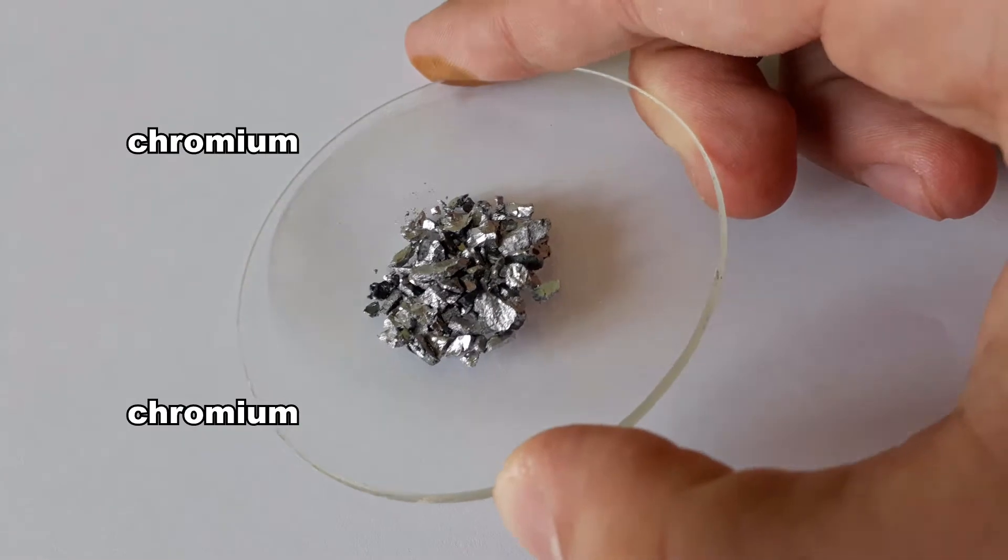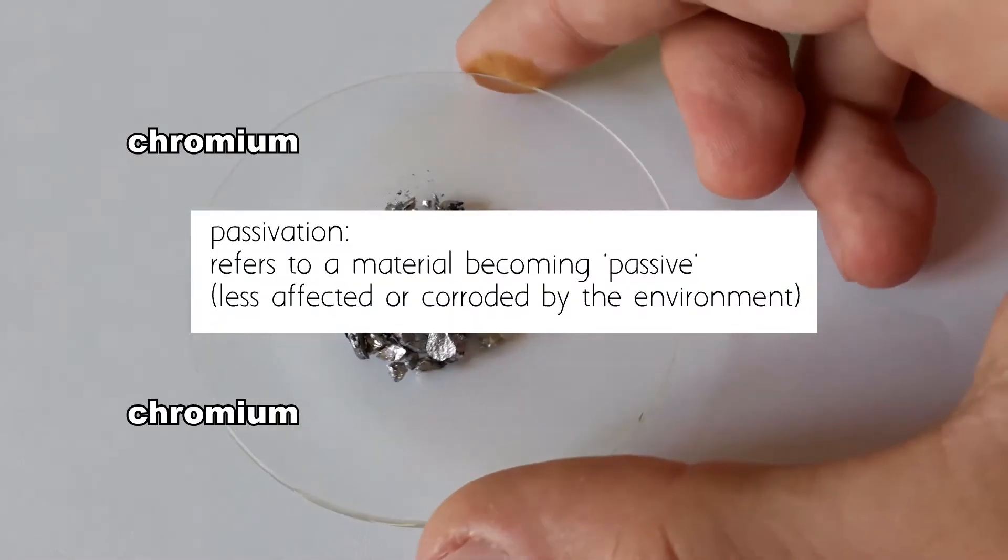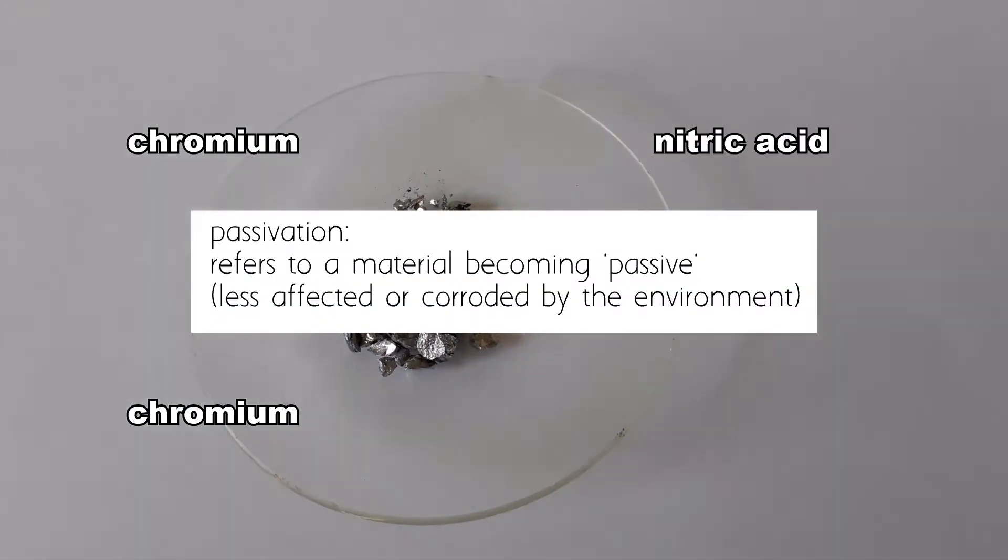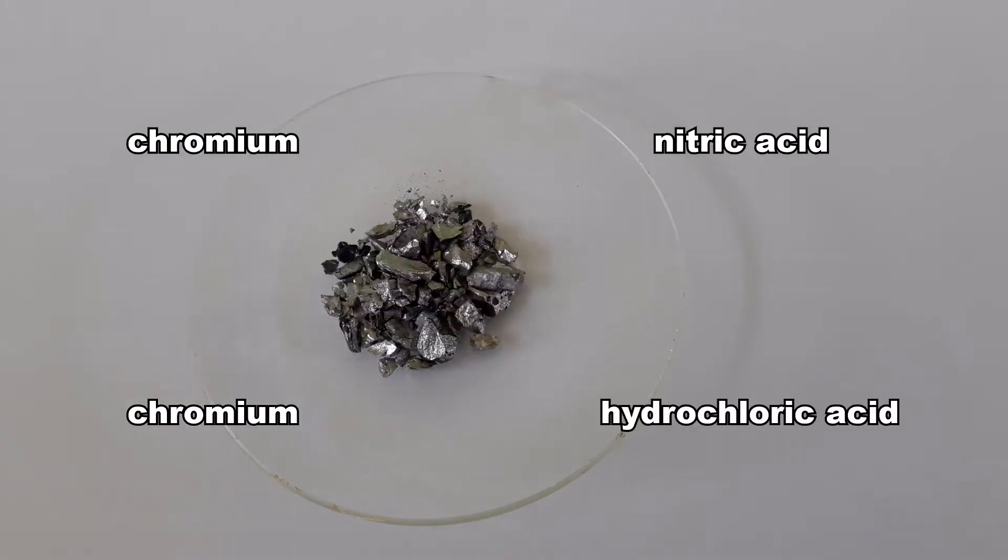Interestingly, chromium itself is actually relatively resistant towards oxidizing acids like nitric acid because it forms an oxide layer on the surface. This process is called passivation. In hydrochloric acid though, the oxide layer is destroyed and the fresh chromium metal is exposed.